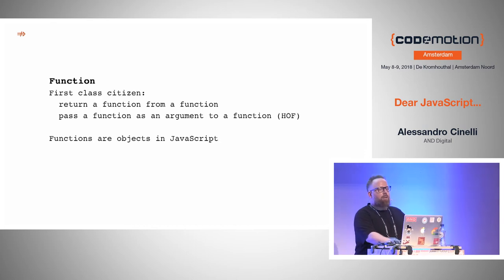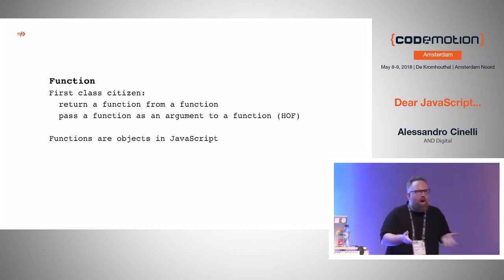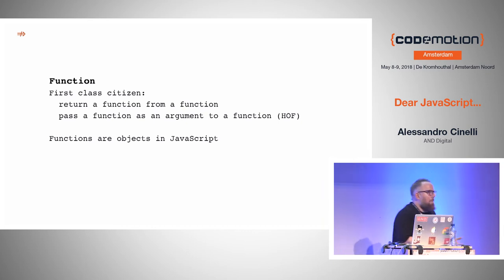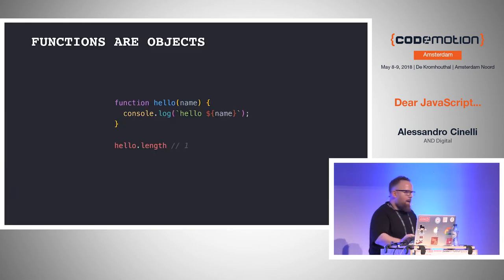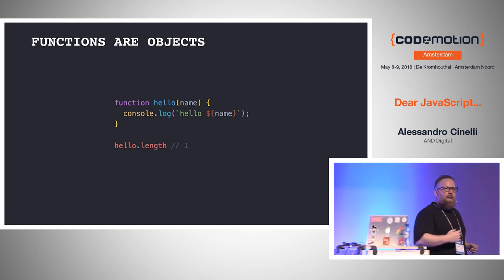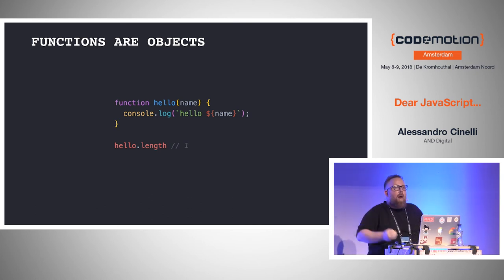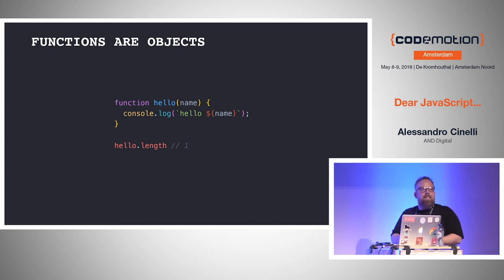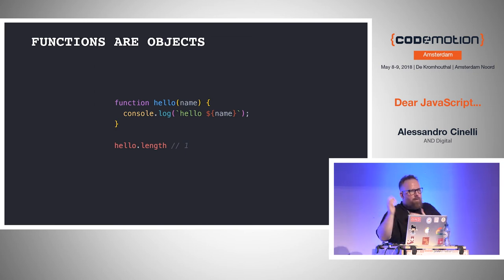Functions are first-class citizens. You can return a function from a function, pass a function as an argument to a function. At the beginning I said, okay, so what? How can I use this? The fact that functions are objects in JavaScript — you have a function hello with one argument, and you can use dot-length, a property on a function like on an object, and it returns one. Zero arguments returns zero, two arguments returns two, and so on.